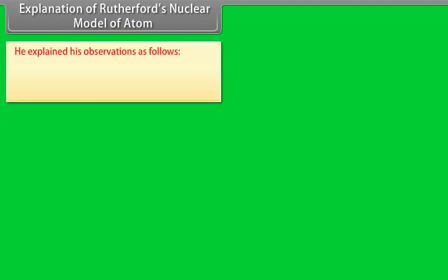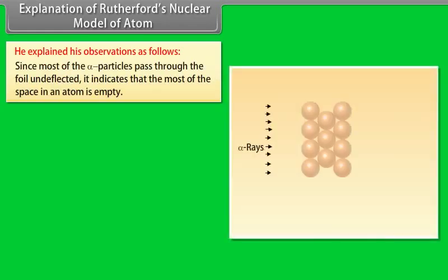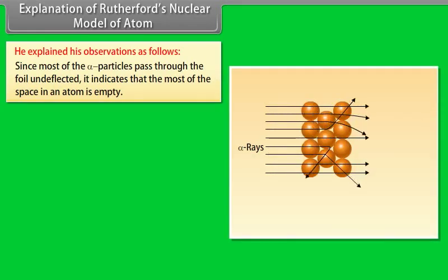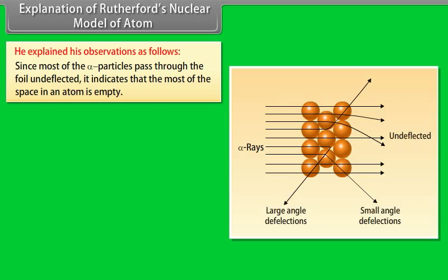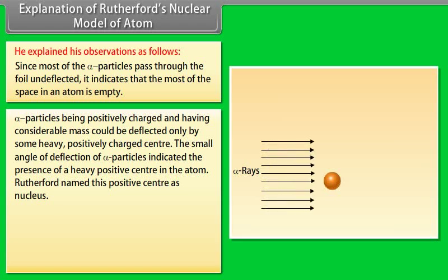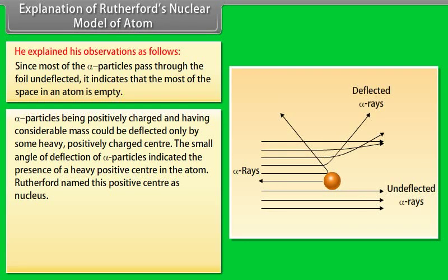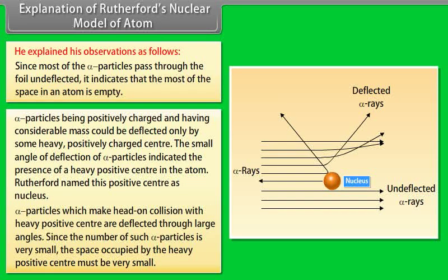Explanation of Rutherford's nuclear model: (1) Since most alpha particles pass through undeflected, most of the space in an atom is empty. (2) Alpha particles, being positively charged and having considerable mass, could be deflected only by a heavy positively charged center; the small angle deflections indicated the presence of such a center, which Rutherford named the nucleus. (3) Alpha particles making head-on collision with this center are deflected through large angles; since such particles are very few, the nucleus occupies very small space.